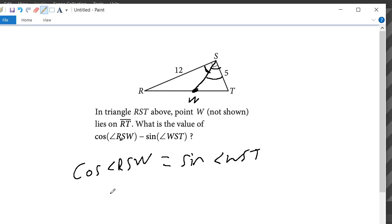then we just have the sine of WST minus the sine of WST, which is just going to be zero because we have two of the same numbers being subtracted from each other.